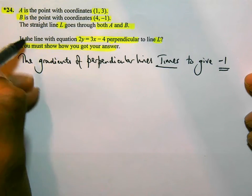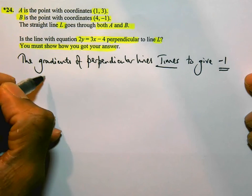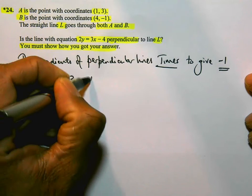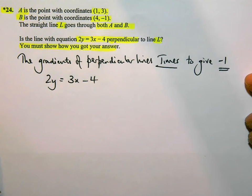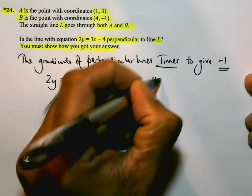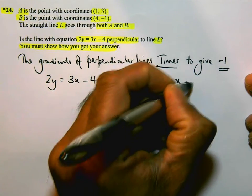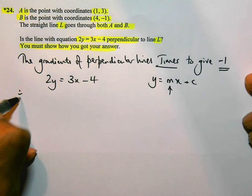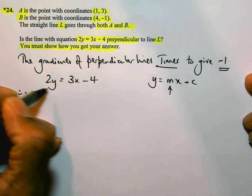So this line here is the line with equation 2y = 3x - 4. We need to work out its gradient. Now, if you remember, y = mx + c, m is the gradient. So I need to rearrange this. I'm going to divide everything by 2 to get rid of that 2, so I have y on its own.